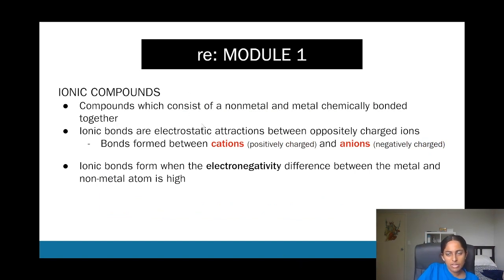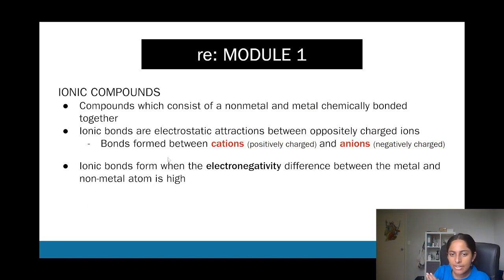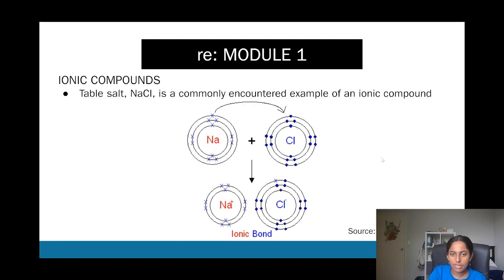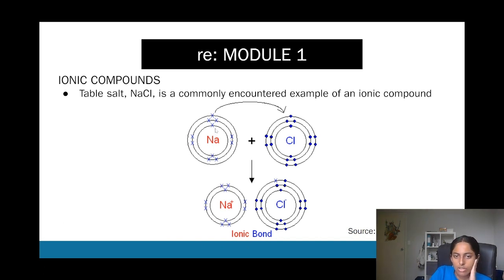Covalent bonds have a smaller electronegativity difference and involve sharing electrons. For ionic compounds, you can define the bonding as electrostatic attractions between a cation and an anion — a cation is positively charged and an anion is negatively charged. Looking at NaCl, the sodium gives its electron to chlorine, forming an ionic bond — that's how sodium chloride is formed.